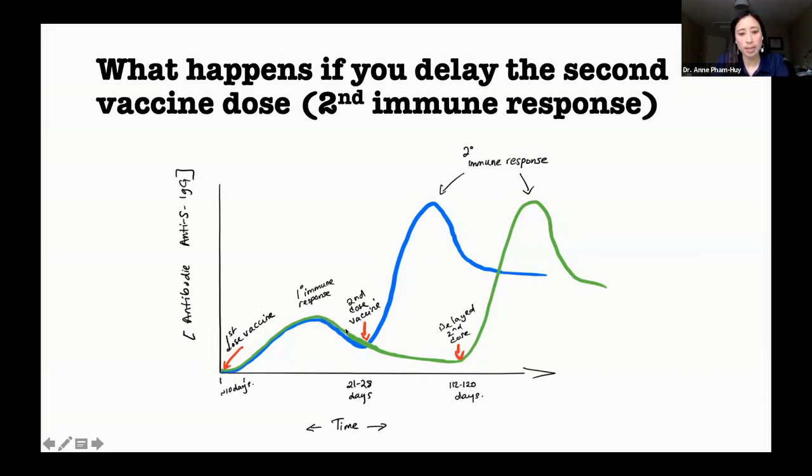So eventually what happens is that the antibodies that are produced after the first vaccine dose would kind of plateau and then go down. But it's not necessarily zero and it's unlikely to be a true zero.